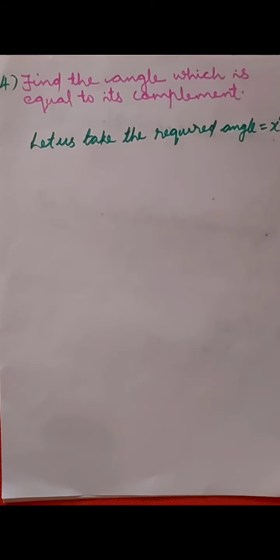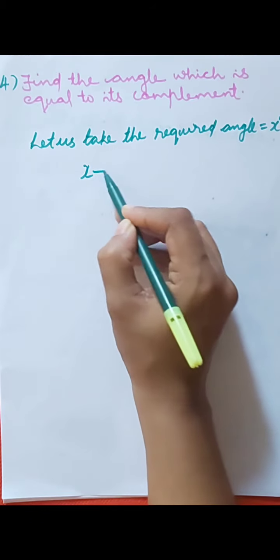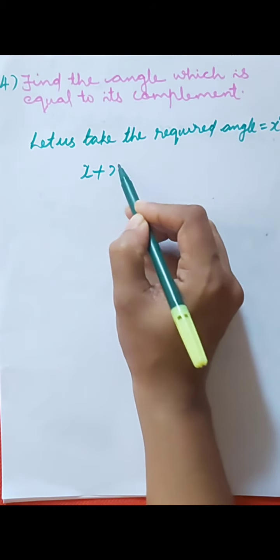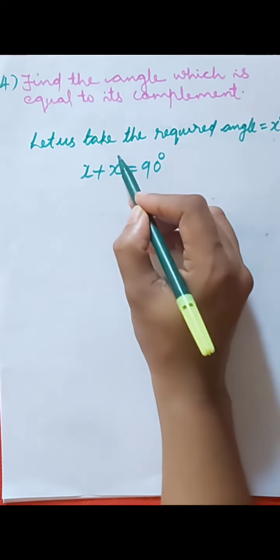What is a complementary angle? The sum of the measures of two angles is 90 degrees — that angle is called a complementary angle. So we get x plus x equal to 90 degrees.